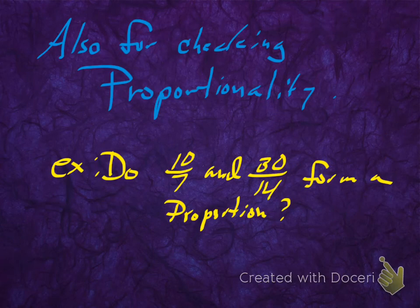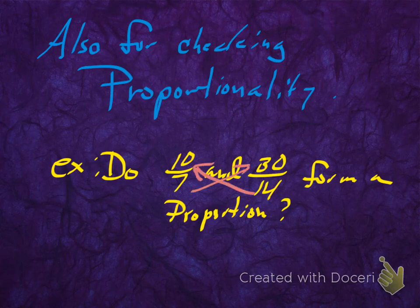Now, both of those problems had a missing number, a variable that we're trying to figure out, but we can also use this idea of cross-multiplying, cross-products, to just check to see if these fractions are equal. And we actually did this earlier this year. We called this the crisscross method.